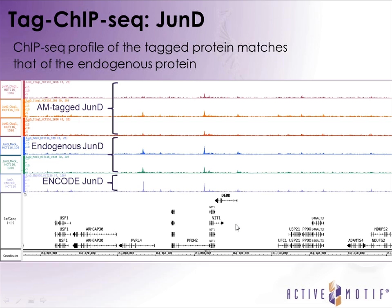Here I show some data where we attached this AM tag to a JunD protein and compared it to endogenous JunD using an antibody against the endogenous protein, and also to ENCODE JunD ChIP-seq data — all in HCT116 colorectal cancer cells. As you look across the profile, it's very similar across all experiments. We've shown a very high degree of reproducibility whether using the endogenous antibody or the AM tag, and it aligns quite nicely with the ENCODE JunD data.